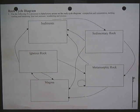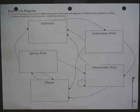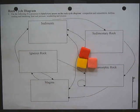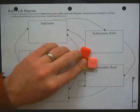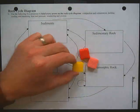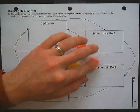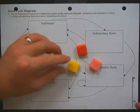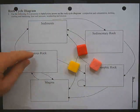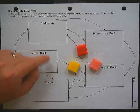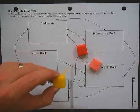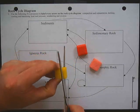Today we're going to do the Starburst rock cycle lab. We're going to take three pieces of Starburst candy, and each candy is going to represent a rock. We're going to break that rock down, which will turn those pieces into sediments, going through the WED process.